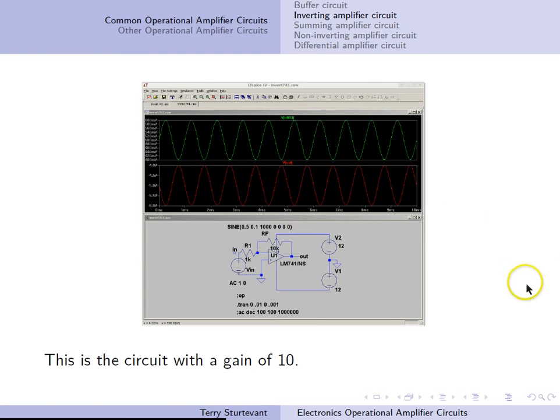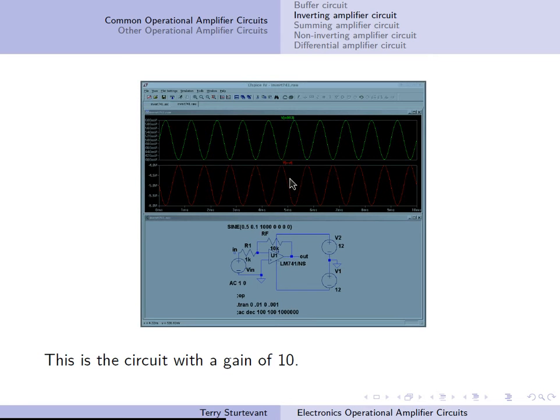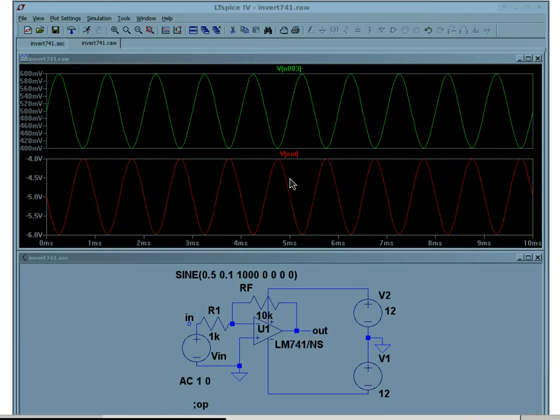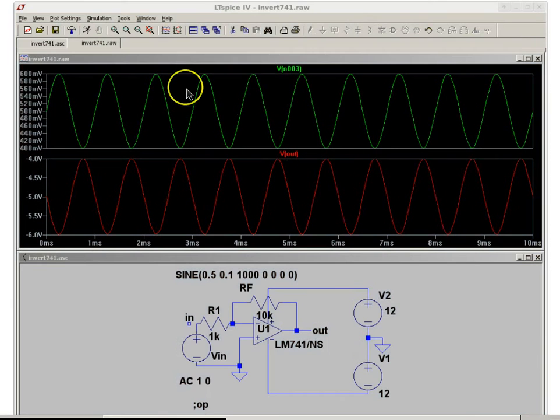Here's what that circuit looks like with a gain of 10. You'll see we have plus and minus 12 volt supplies. If we zoom in, we can see the input voltage goes from 400 millivolts to 600 millivolts.